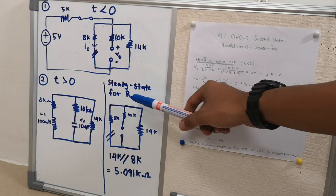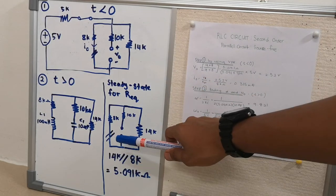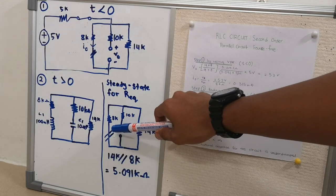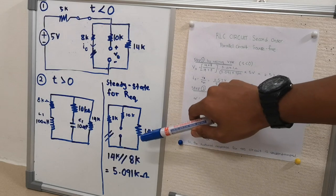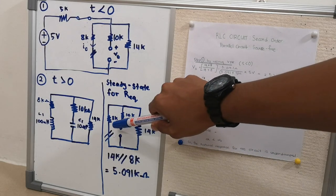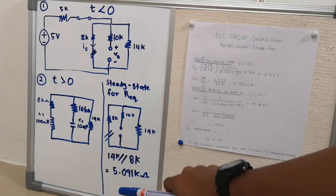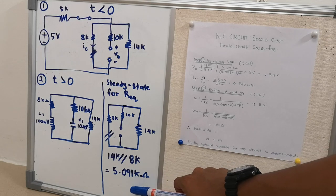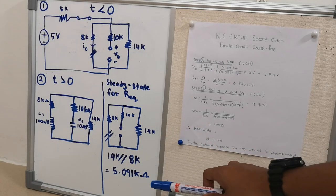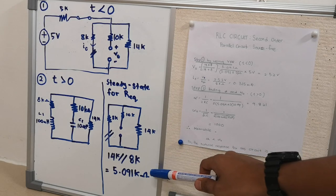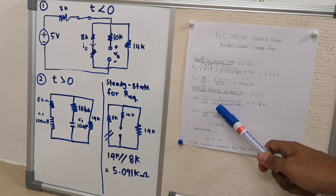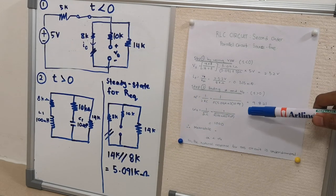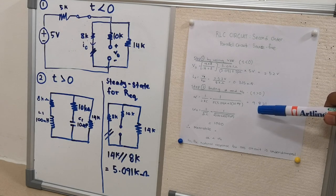For the R equivalent in the alpha equation, we use steady-state conditions where the capacitance is open and inductance is a short. We use 14K in parallel with 8K ohms, which gives 5.091K ohms. Substituting into the alpha equation gives alpha equal to 9.1821.